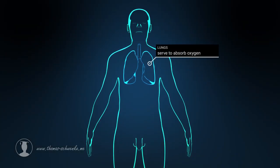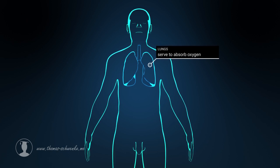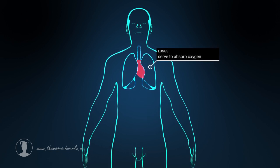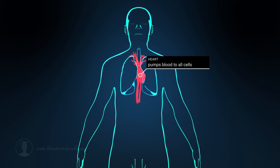Oxygen, which is absorbed by the lungs and reaches every cell in our body with the help of the heart and blood vessels, is therefore an important building block in the production of ATP.